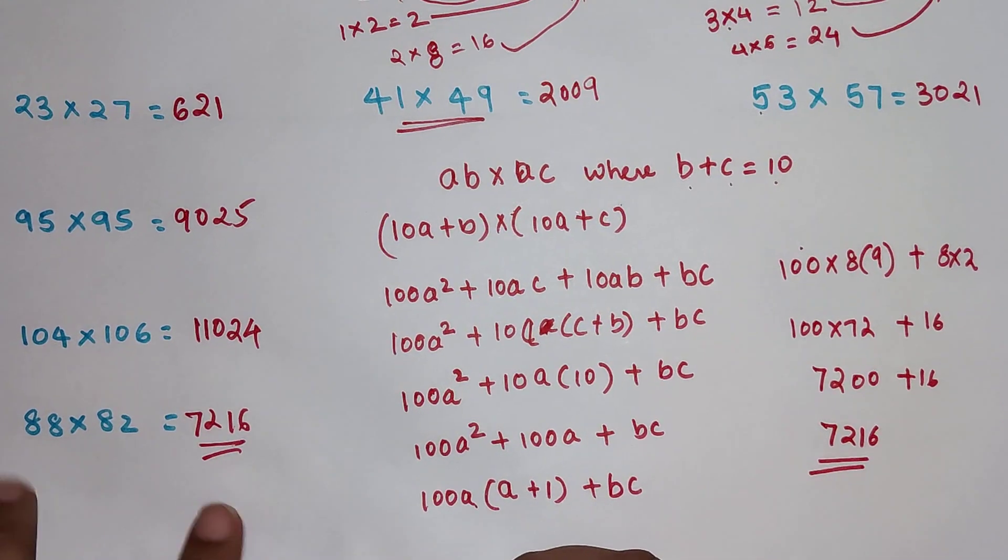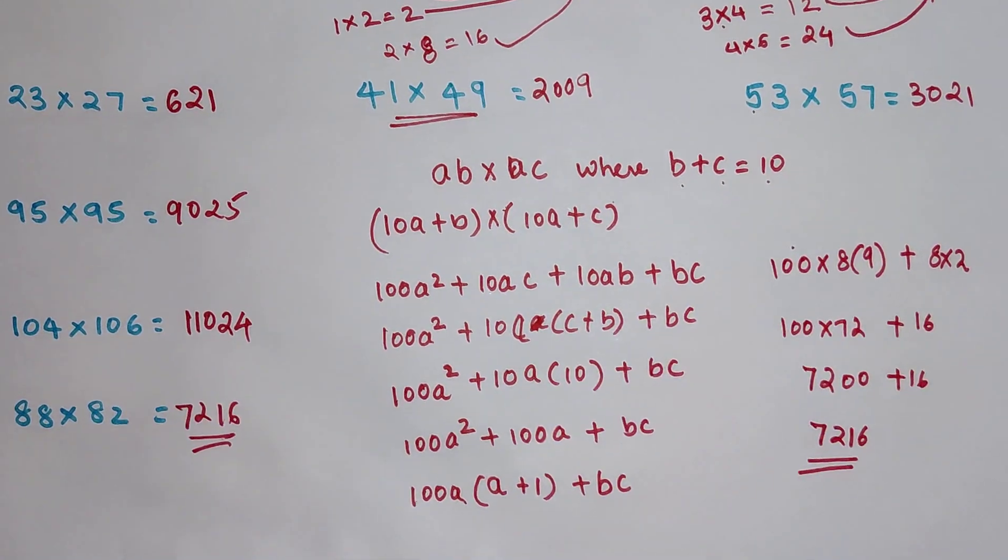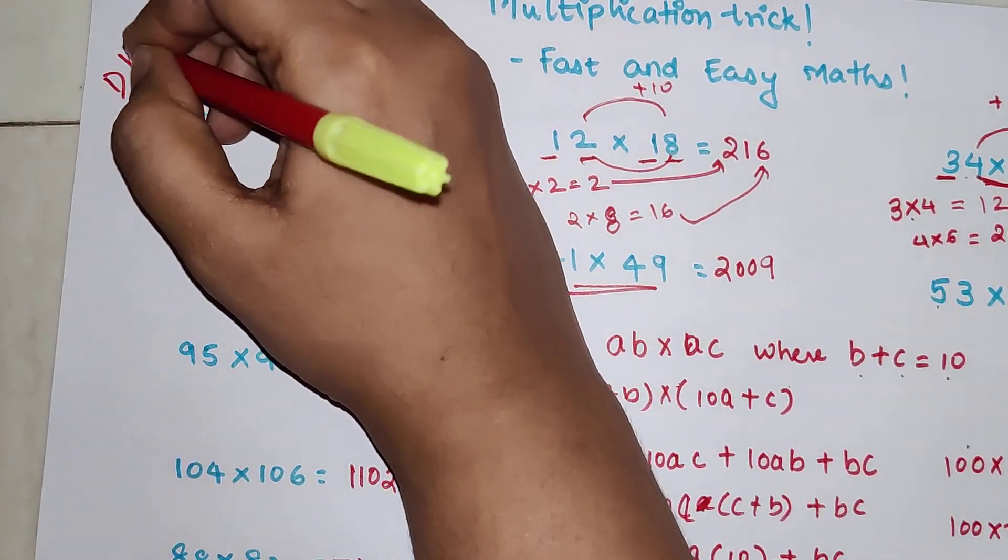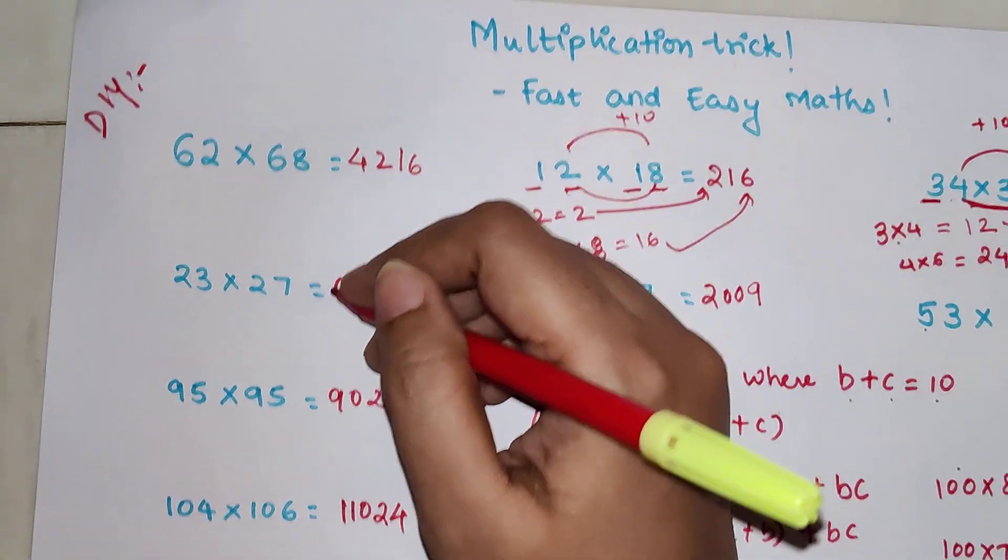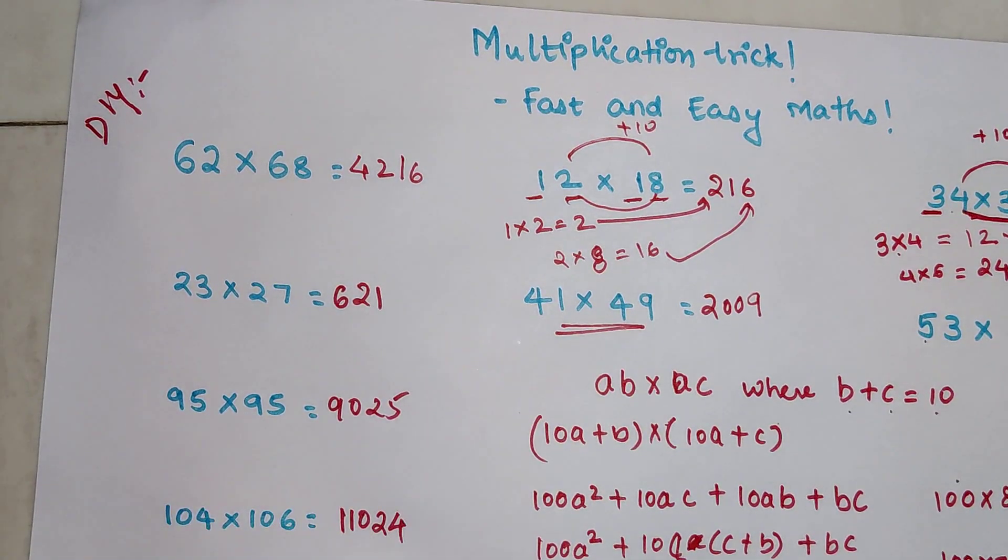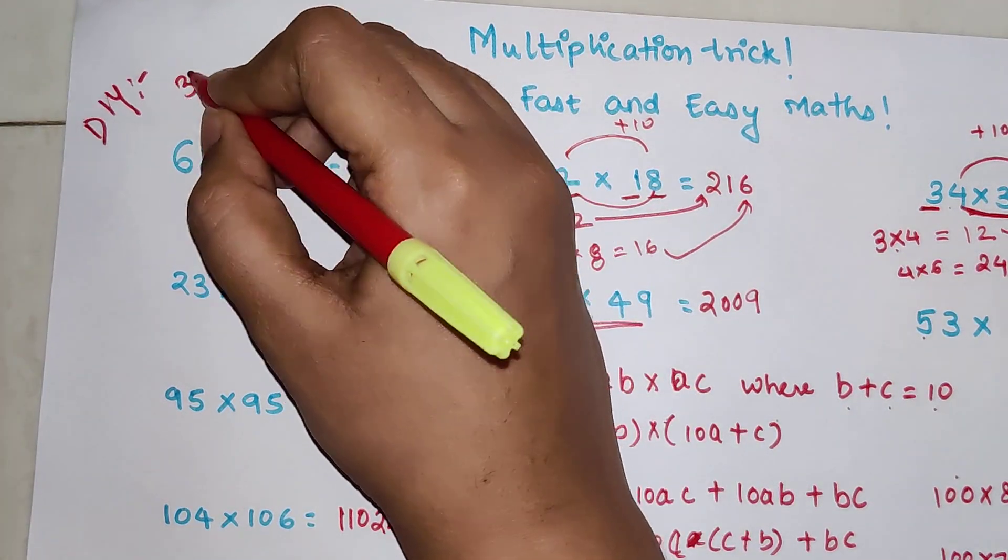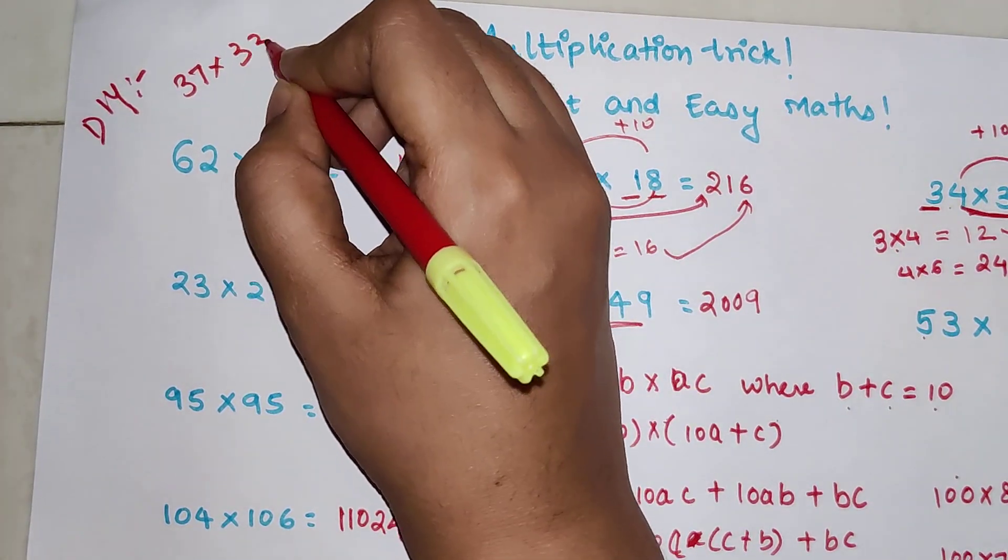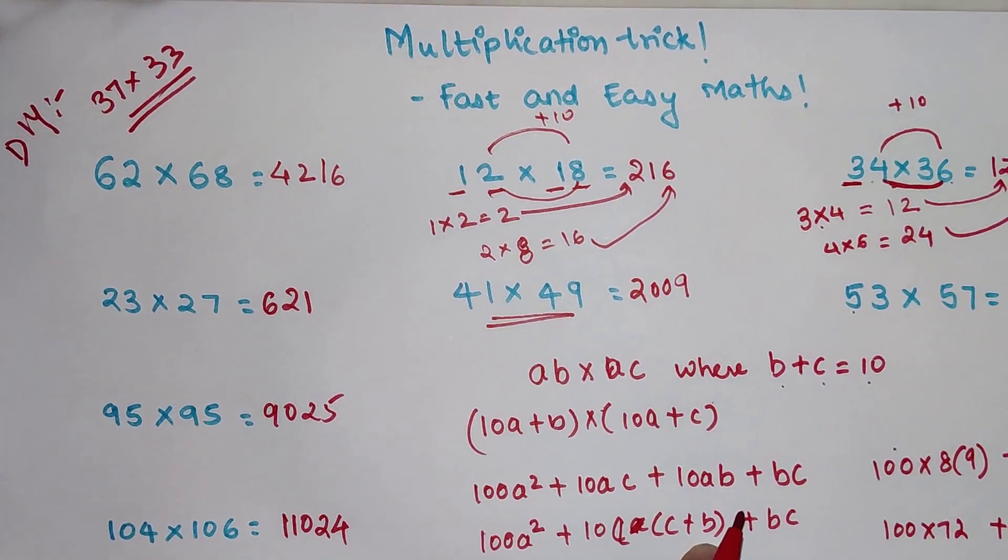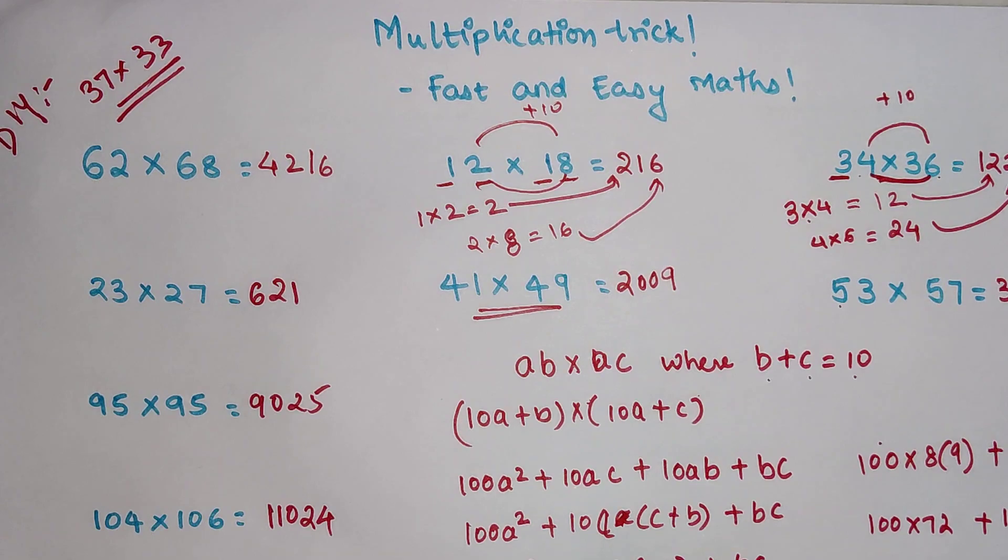So I hope you have understood how this entire trick is working. So now coming to your DIY. I want you to tell me what is the answer of, let me pick a question. 37 into 33. Do let me know your answers in the comment section. That's it for now. I will see you in the next video.